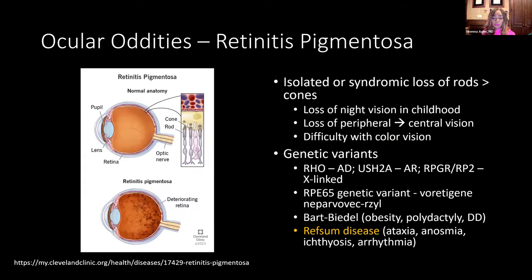Retinitis pigmentosa — we need to know this as dermatologists. We would not necessarily see this on exam, but we may see the cutaneous features, for example ichthyosis, in patients who also have complaints of night blindness, scissor gait, or family history of cancer. There are many syndromes that have retinitis pigmentosa in different forms related to their skin condition. A referral to ophthalmology is appropriate if you have a patient with the relevant cutaneous presentation and a history of loss of night vision in childhood, as that's usually the first sign before it progresses.